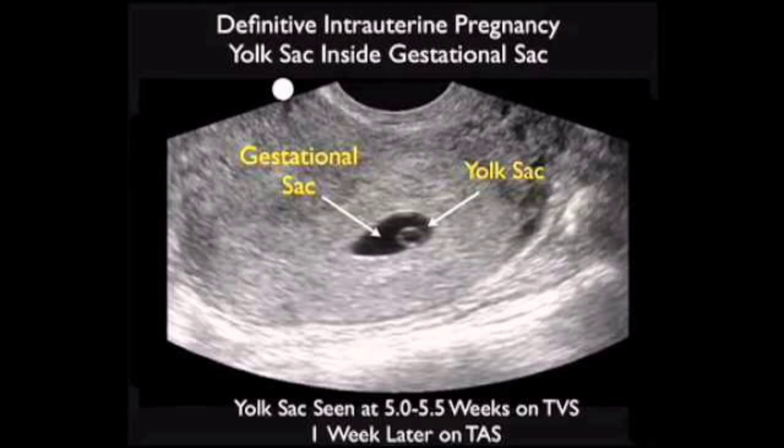Appearing within the gestational sac, the yolk sac is a small, circular, hyperechoic ring that appears at about day 35, or between weeks 5 and 6, counted from the beginning of the last menstrual cycle. The yolk sac also grows at about 1 mm per day until about 9 weeks, when it begins to regress. The yolk sac is less useful in determining gestational age.